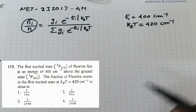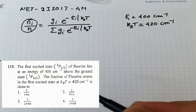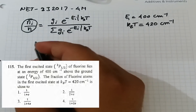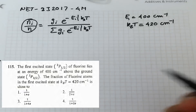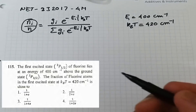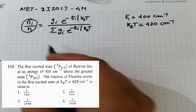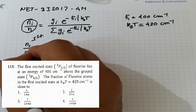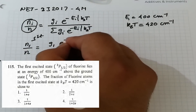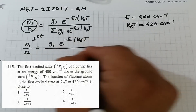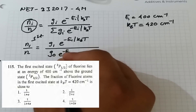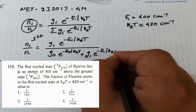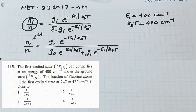The degeneracy is not directly given but can be obtained from the term symbols. For the first excited state the expression is: n₁/n = g₁ e^(−ε₁/k_BT) / [g₀ e^(−ε₀/k_BT) + g₁ e^(−ε₁/k_BT)]. The ground state energy ε₀ = 0, so we need g₁ and g₀ from their term symbols.